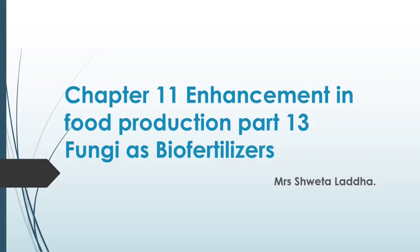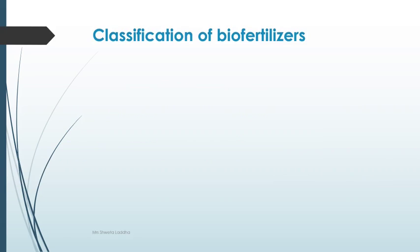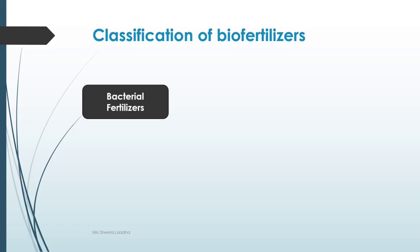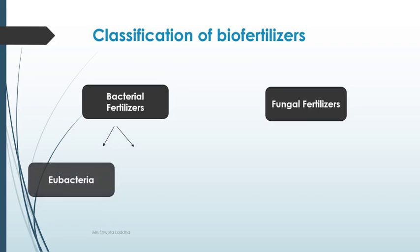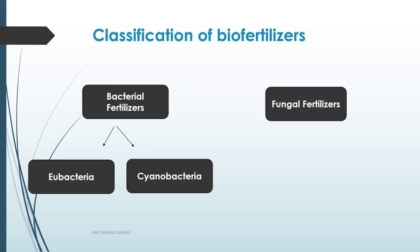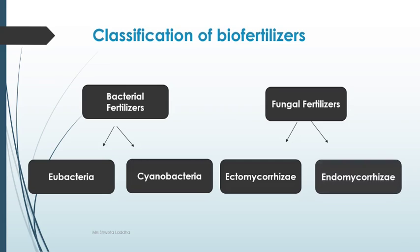Hello students, welcome to part 13 of chapter 11, enhancement in food production. Today we are going to discuss how fungi are used as biofertilizers. Biofertilizers can be classified as bacterial fertilizers or fungal fertilizers. Bacterial fertilizers include eubacteria and cyanobacteria, whereas fungal fertilizers include ectomycorrhizae and endomycorrhizae. Today we will be discussing only fungal biofertilizers.